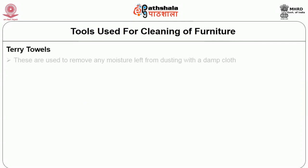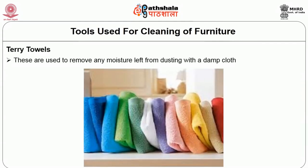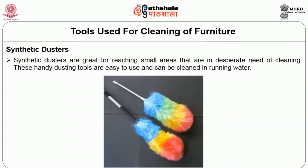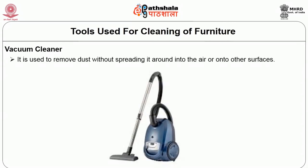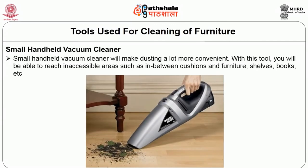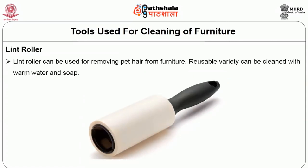Clean soft cotton cloths are also commonly used as a cleaning tool — wet them slightly to help trap the dust. Terry towels are used to remove any moisture left from dusting with a damp cloth. Synthetic dusters are great for reaching small areas and can be cleaned in running water. The vacuum cleaner is an important cleaning tool used to remove dust without spreading it into the air or onto other surfaces. Small hand-held vacuum cleaners are also convenient for reaching areas such as between cushions and furniture shelves. A lint roller can also be used to remove pet hair from furniture and can be cleaned with warm water and soap.